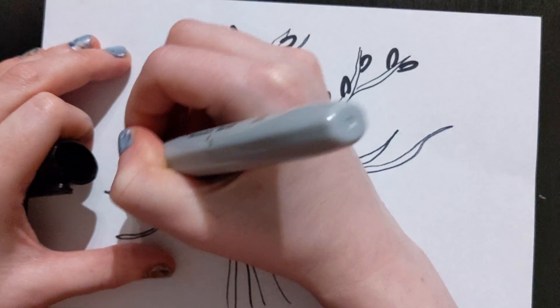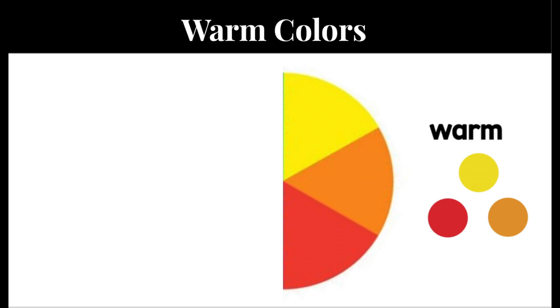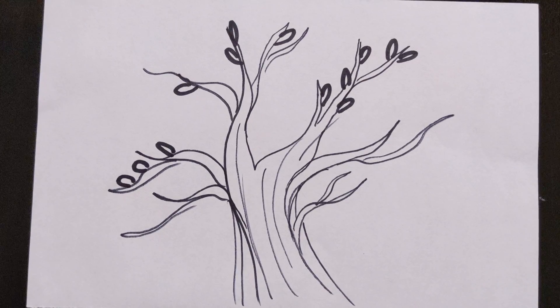And the trick is you want to use the right colors. So you want to use the colors of autumn, your warm colors, such as red, yellow, and orange. And you can also use light green.